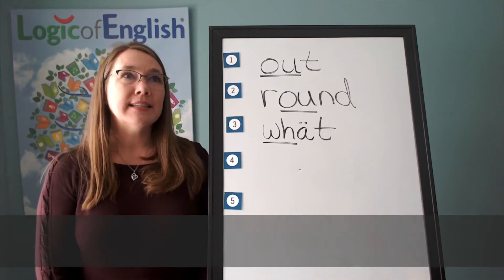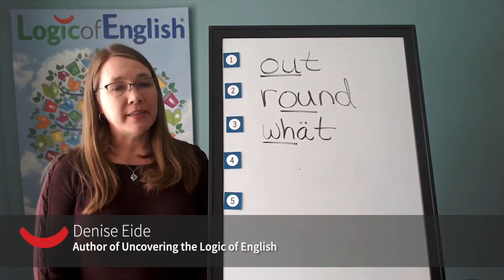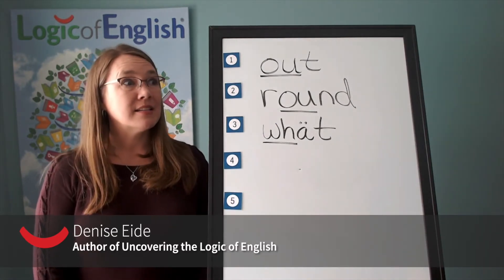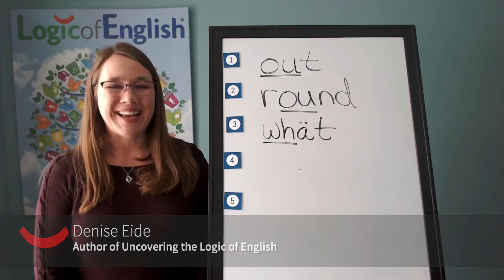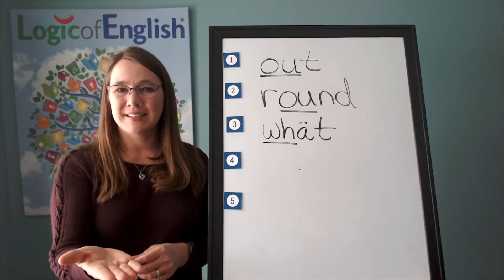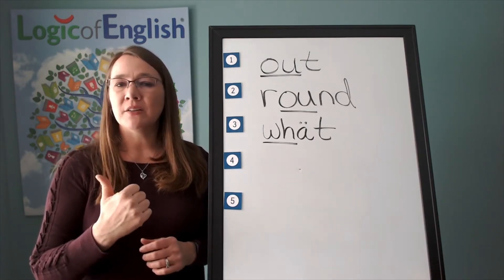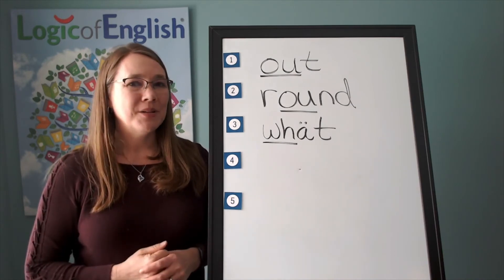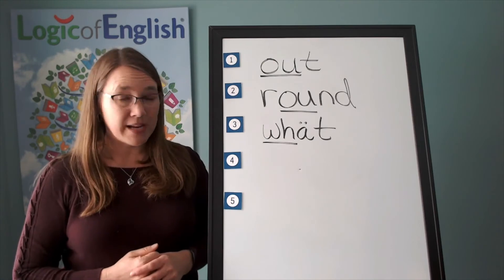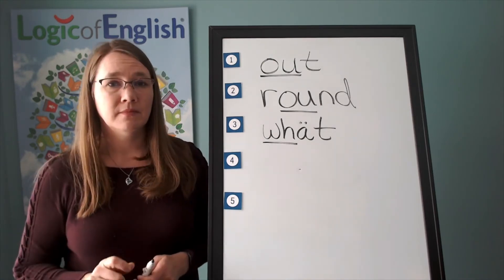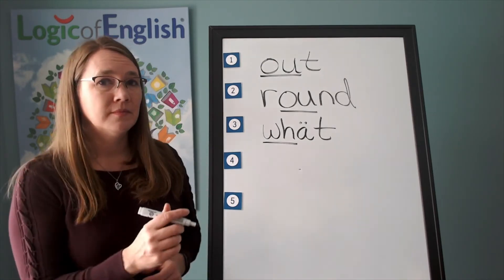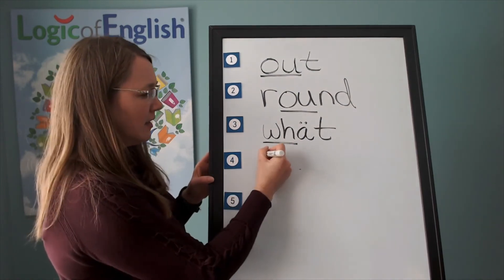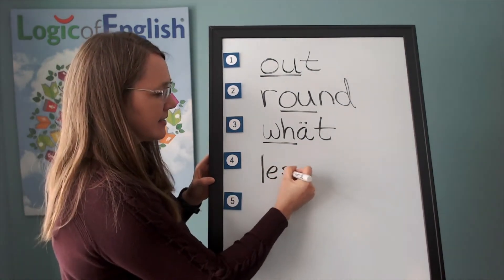The next word is less. I can buy that for less at the other store. Less. Go ahead and say less. Less. Let's sound it out. L, eh, s, s. Good job. Now go ahead and write it. And now help me write it. L, eh, s, s.